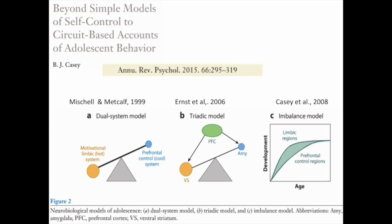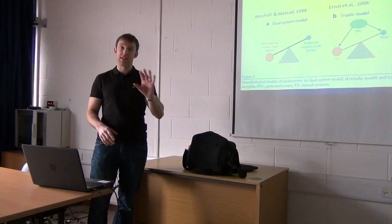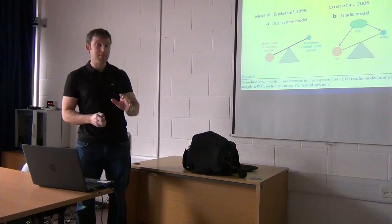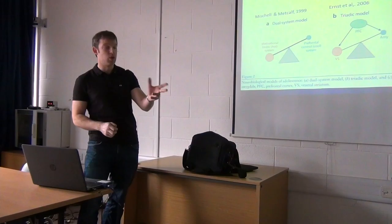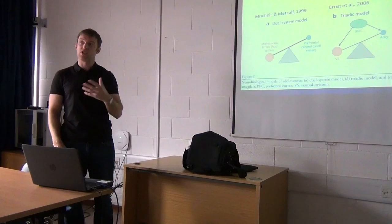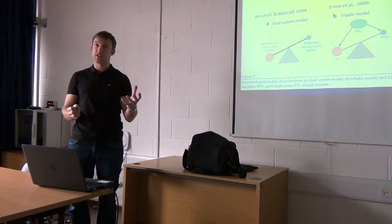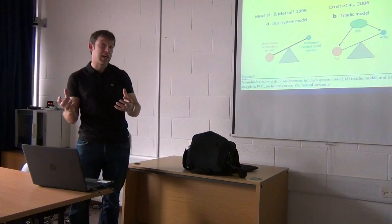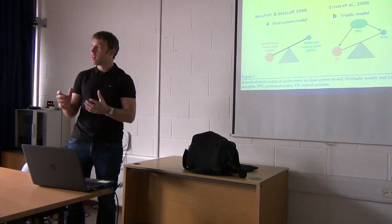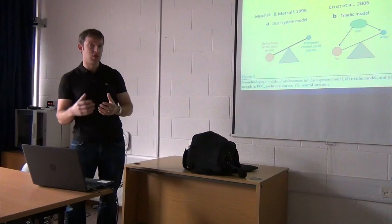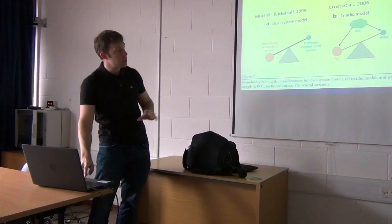There's a very nice review by BJ Casey in the Annual Review of Psychology where she works through a few of these models. The basic idea is that there's a subcortical system — the basal ganglia and limbic system — that's the 'hot' system, like Kirk from Star Trek. Then there's a prefrontal top-down cognitive control 'cool' system, like Spock, that imposes order. In adolescence the hot system is overdeveloped relative to the prefrontal cool system, which is why adolescents have issues around risk-taking and misusing substances like alcohol, cannabis, and nicotine.